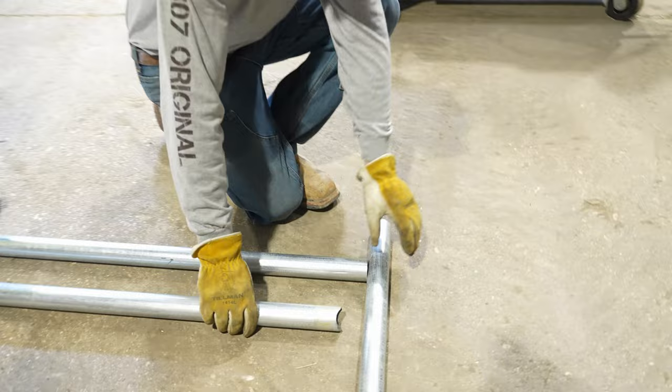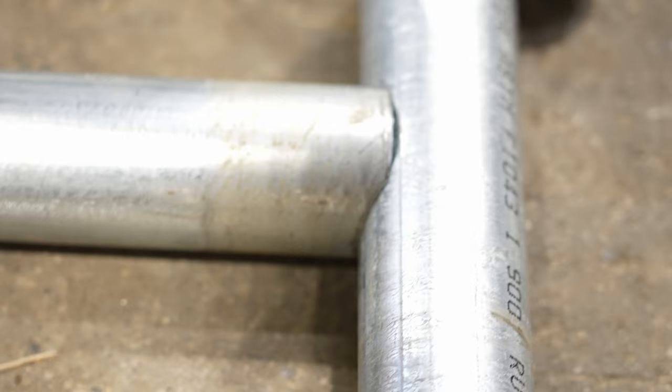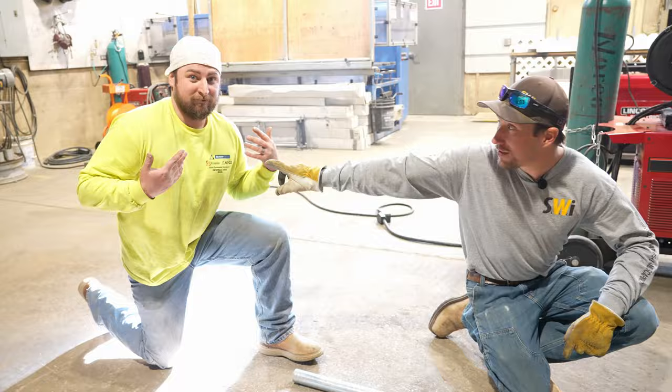So here is one that has been coped, it's been saddled. So it has that notch out of it. And what that's going to do is that's going to receive into that vertical pipe just as so, which then allows Nolan here to weld all the way around that intersection.